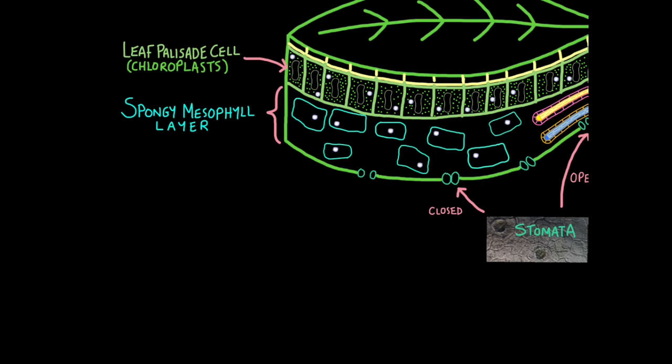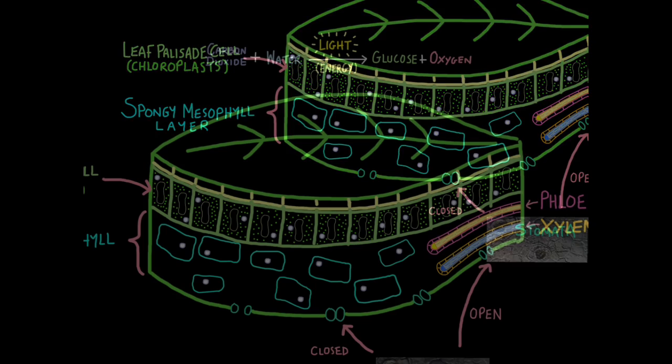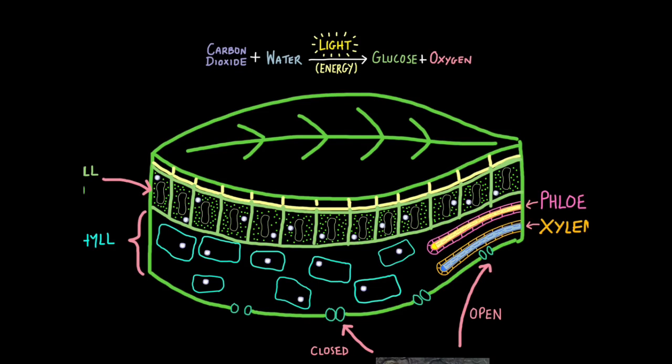So stomata allow carbon dioxide and oxygen in and out of the cell through the process of diffusion. Next, we have another layer which is useful for gas exchange. This is called the spongy mesophyll layer, though you can just call it the spongy layer if you wish. The spongy layer cells are loosely packed and that allows gases to easily diffuse through to the palisade cells where photosynthesis is happening. Similarly, it allows gases to diffuse out as well. So now we've looked at carbon dioxide and oxygen, we've also looked at light. What about water?